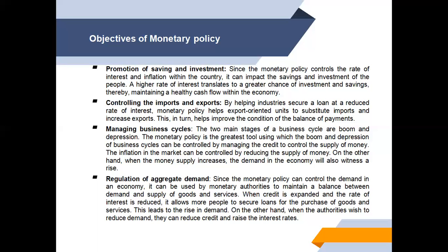The fourth objective is regulation of aggregate demand. Since monetary policy can control demand in an economy, monetary authorities can use it to maintain a balance between demand and supply of goods and services. When credit is expanded and the rate of interest is reduced, more people can secure loans for the purchase of goods and services, leading to a rise in demand. On the other hand, when authorities wish to reduce demand, they can reduce credit and raise interest rates.